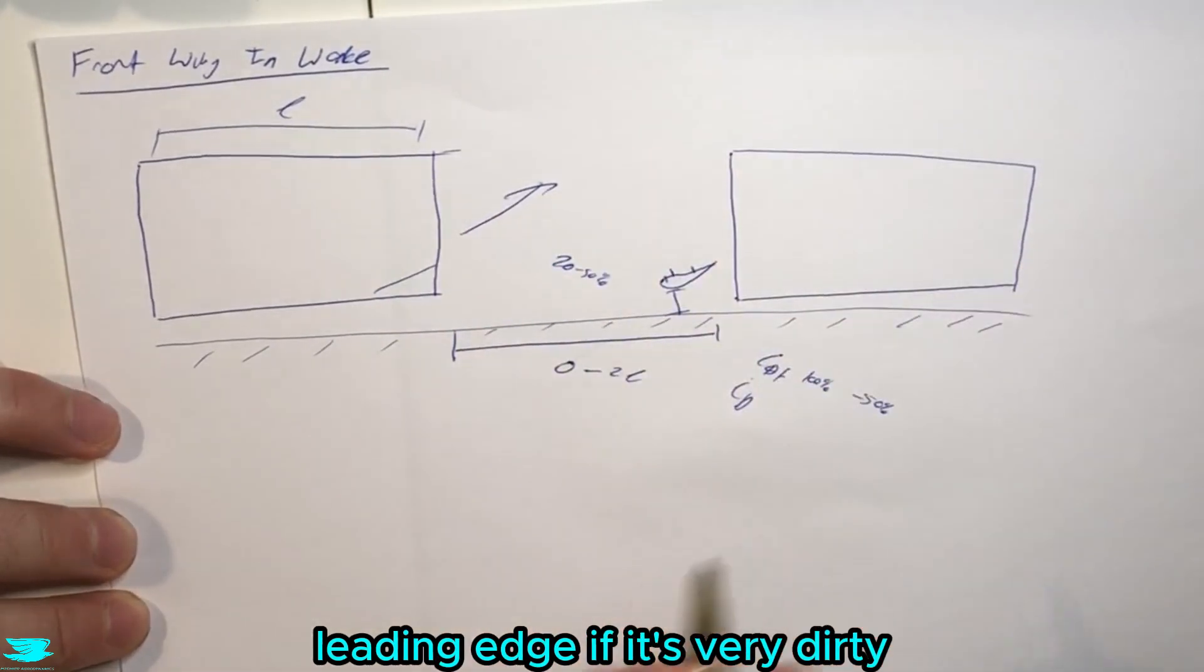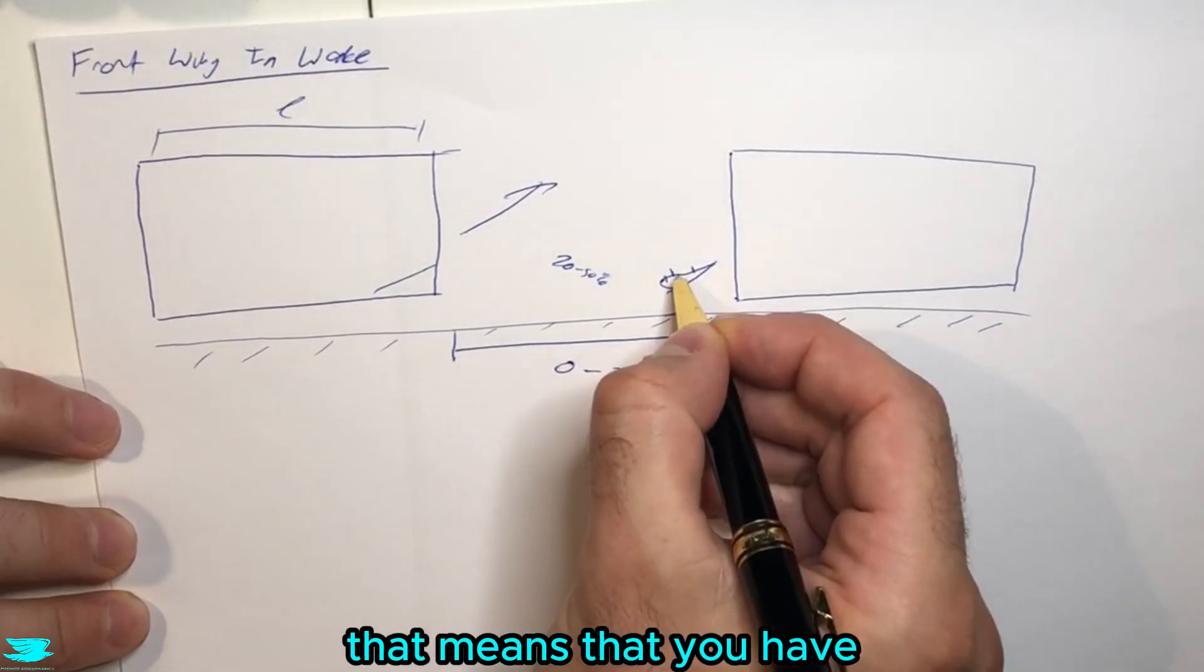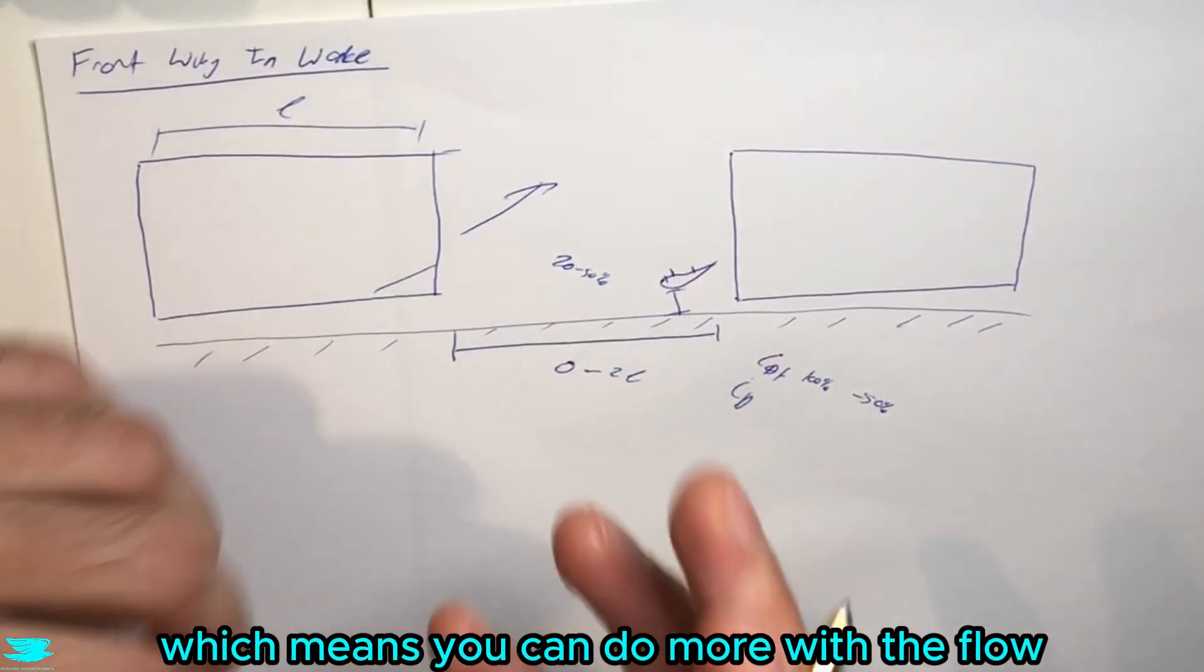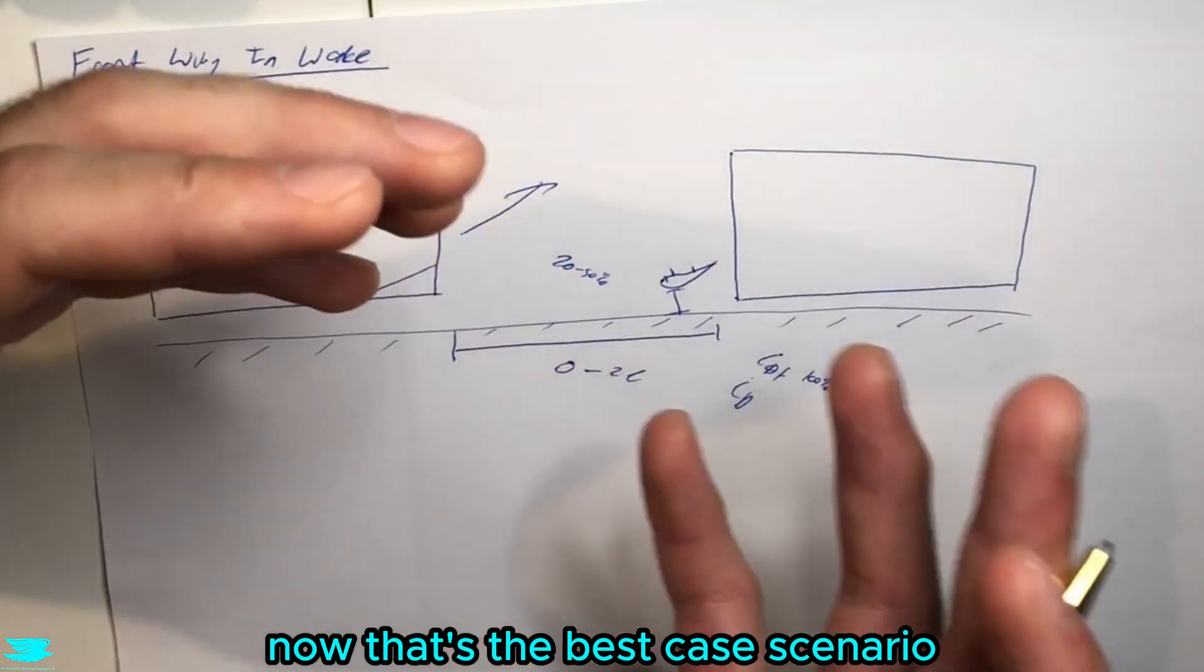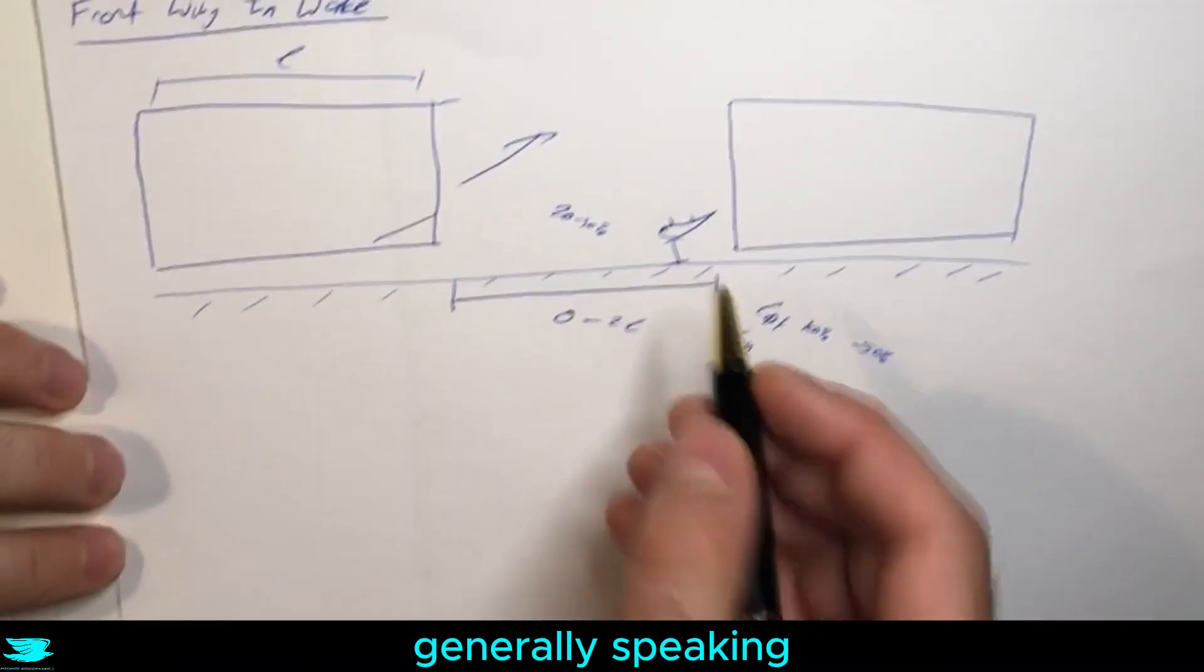That means that you have a fast moving boundary layer, which means you can do more with the flow. Now that's at the best case scenario.